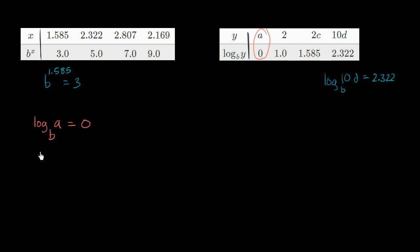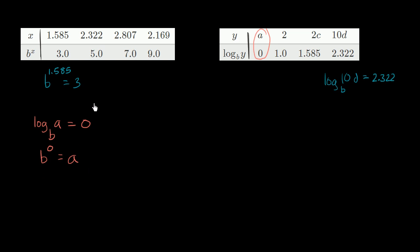This is an equivalent statement to saying b to the zero power is equal to a. This is saying: what exponent do I need to raise b to in order to get a? Well, you raise it to the zero power. Now, anything to the zero power — assuming that b is not zero, which is a safe assumption since we're raising b to all these other powers and getting non-zero values — is going to be one. So this tells us that a is equal to one.